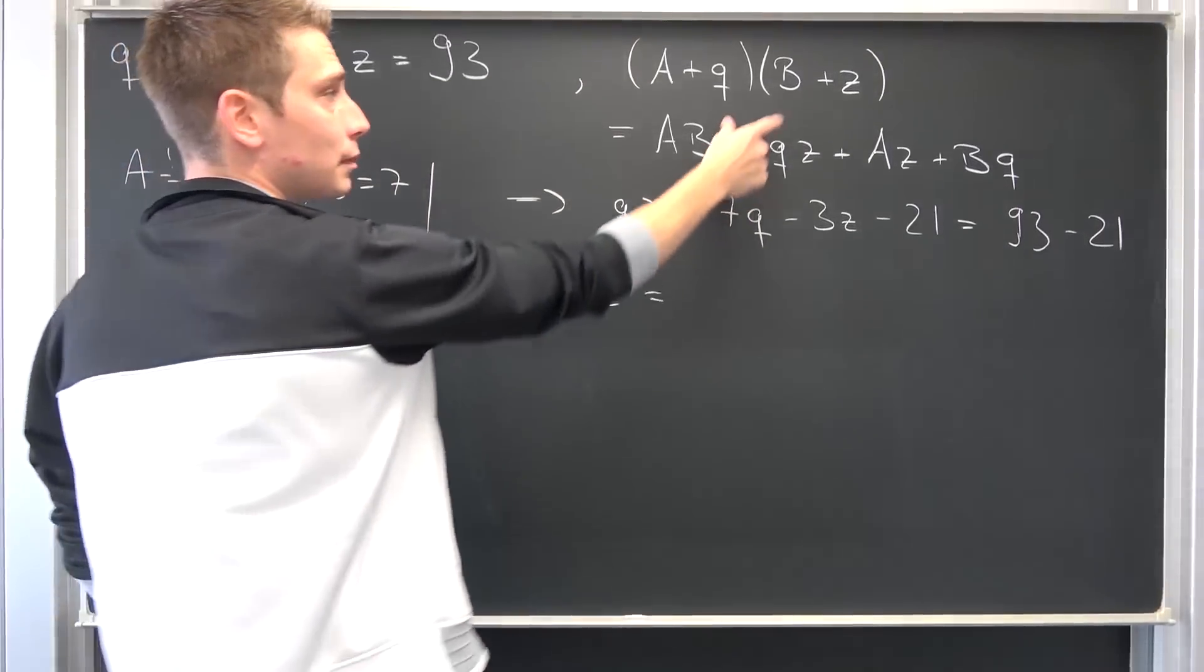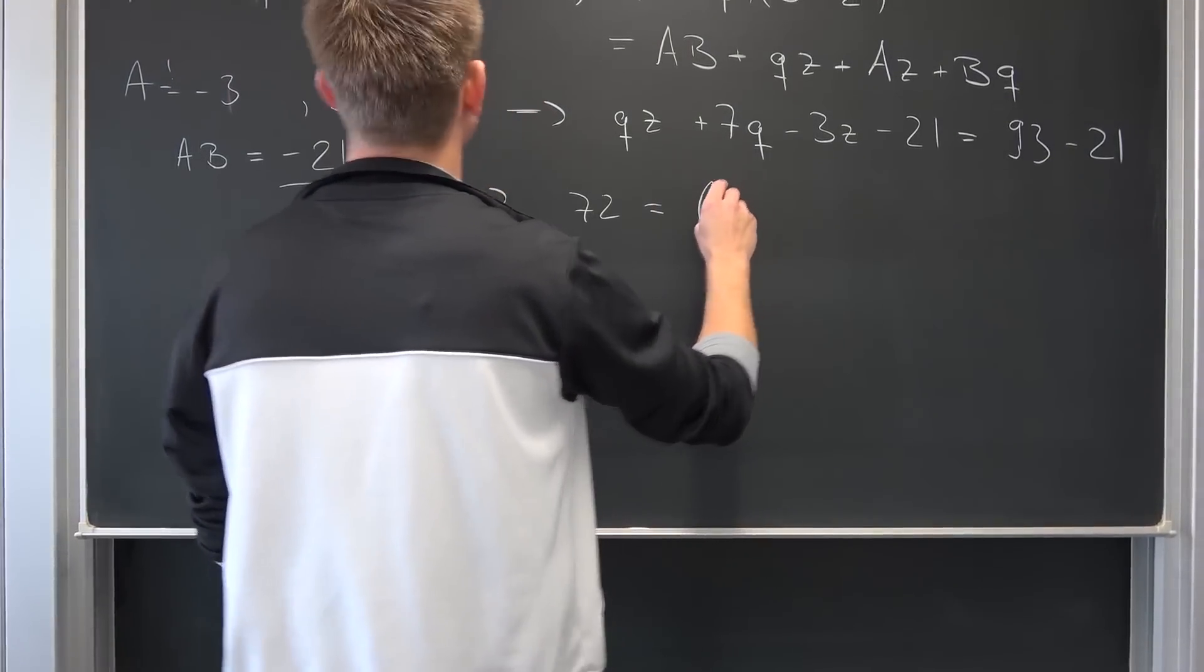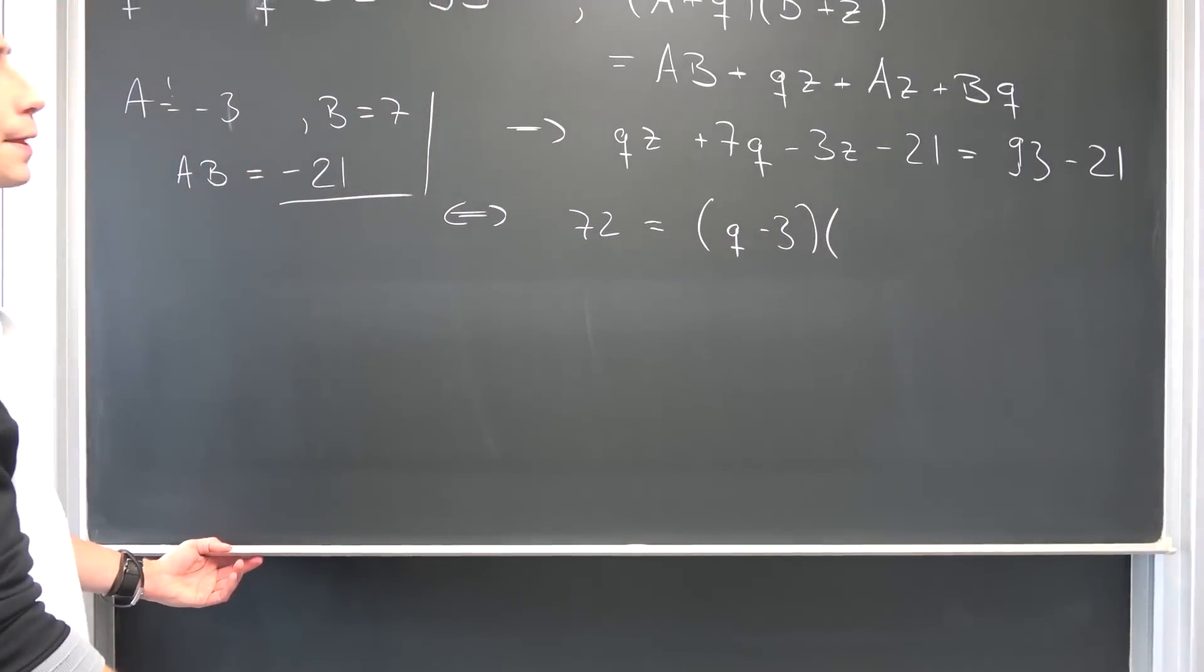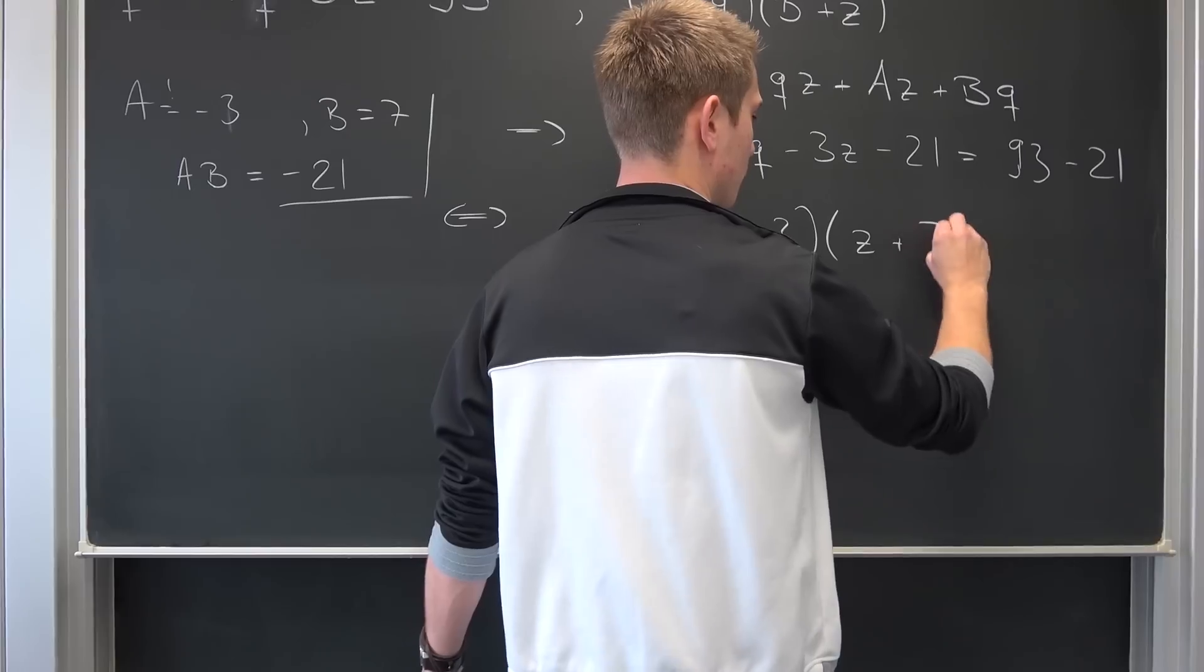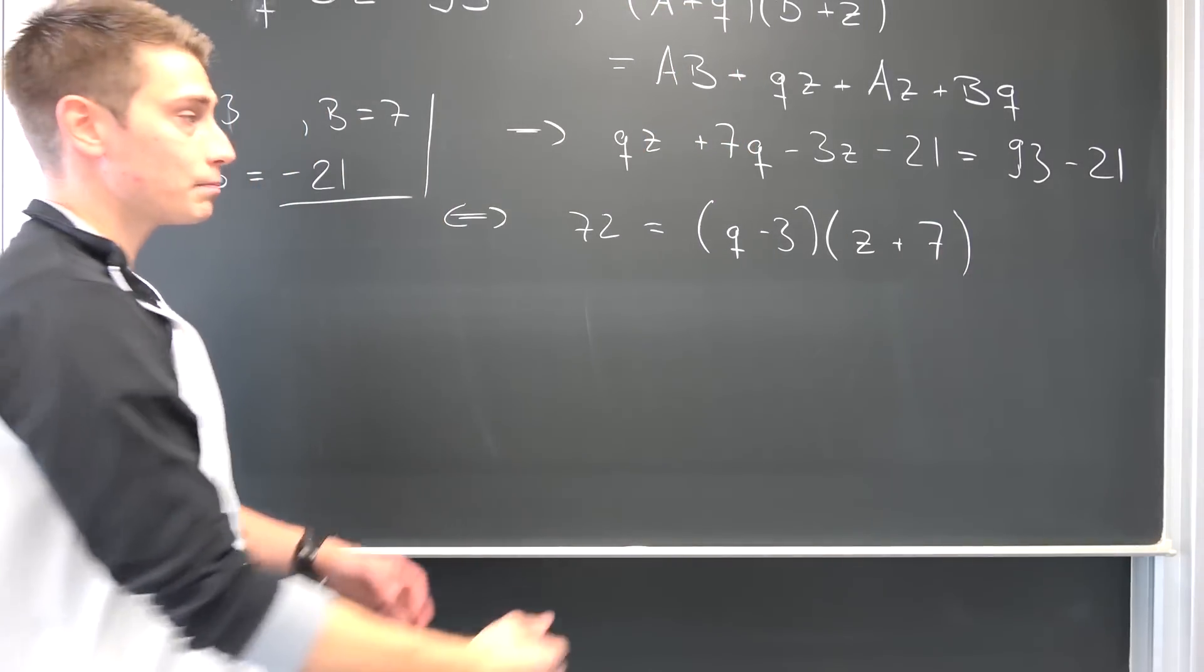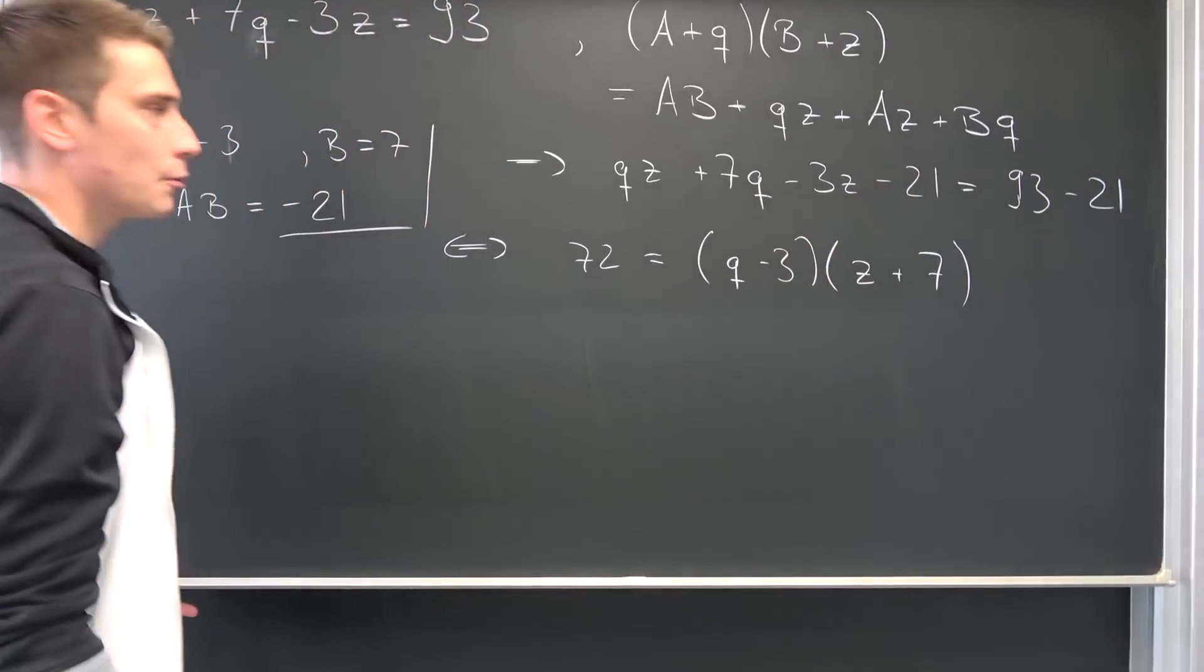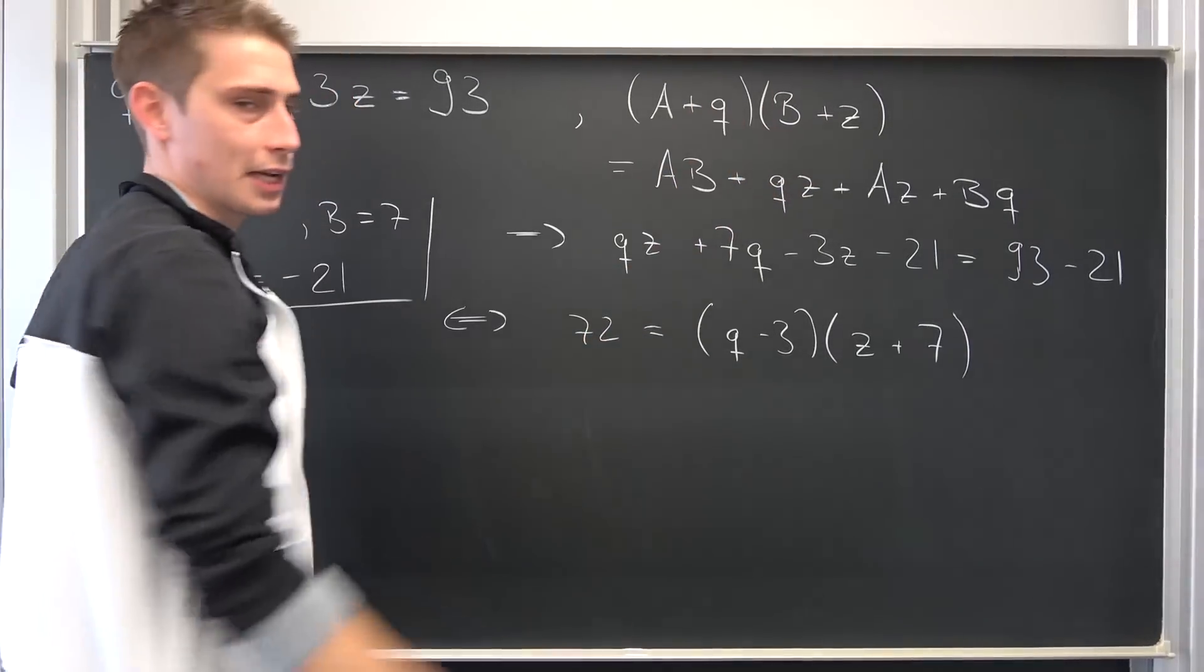Being equal to our two factors that we have up here. Meaning overall this is (q - 3) times (z + 7). I hope this does make sense to you. Those two equations are indeed equal because we had this new restriction. We had to get rid of the factor of A times B yet again for us to factor everything nicely.